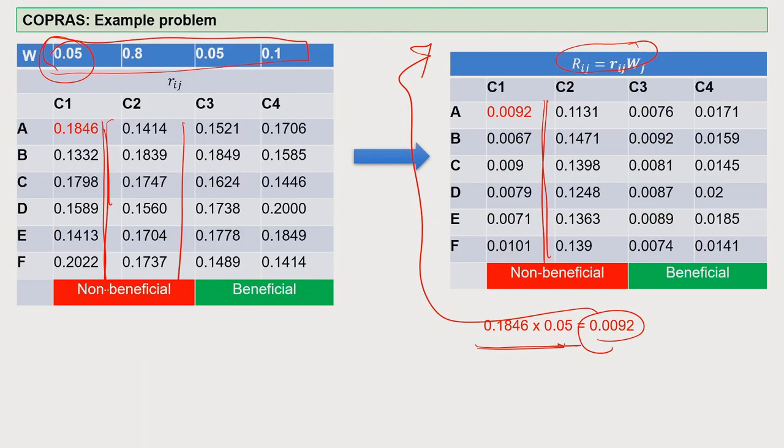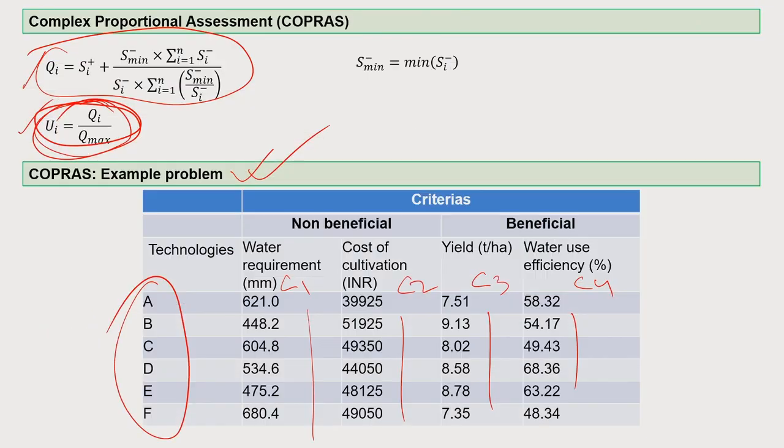Today we conclude the entire MCDA technique series — covering how to calculate different weightages, how to normalize them for different methodologies, some more complicated and some simpler. Analytical Hierarchical Process (AHP) is one method that many of you will be required to use when working in the field of natural resource management.